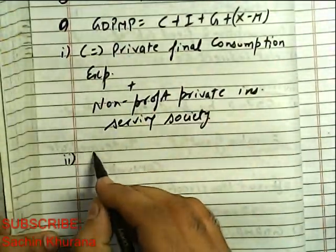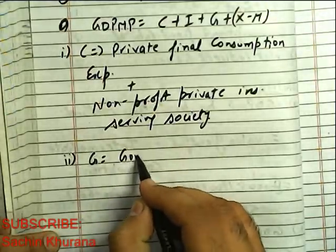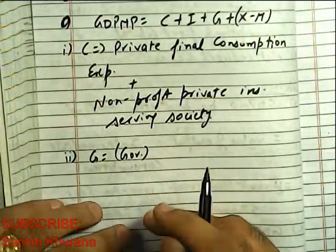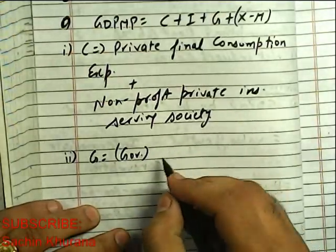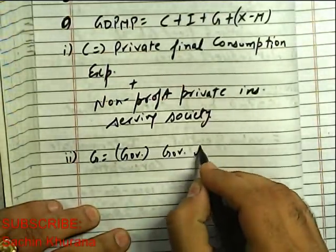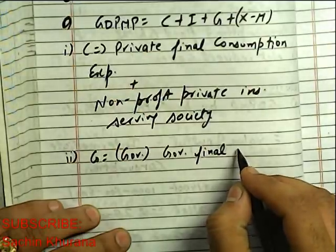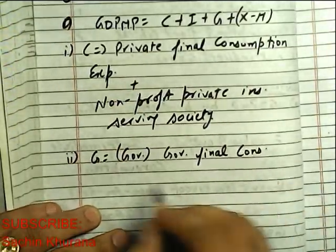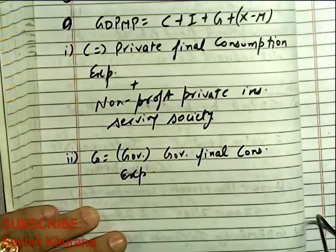The next component is G, which stands for Government Final Consumption Expenditure. This covers the final consumption expenditure made by the government.